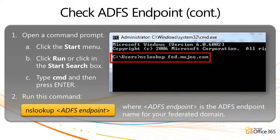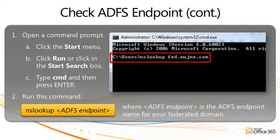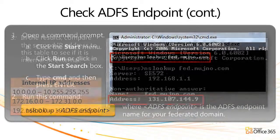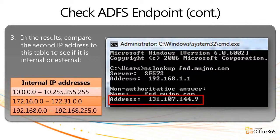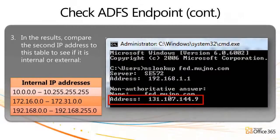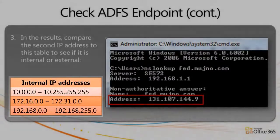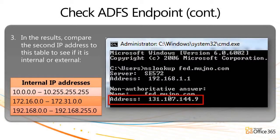On the computer which is experiencing the problem, open a command prompt. Run this command where ADFS endpoint is the ADFS endpoint name for your federated domain, such as sts.domain.com or fed.domain.com. The results should look something like this. Make a note of the second IP address and consult this table to see if it's a public or internal address. For instance, the image you see here shows a public IP address.